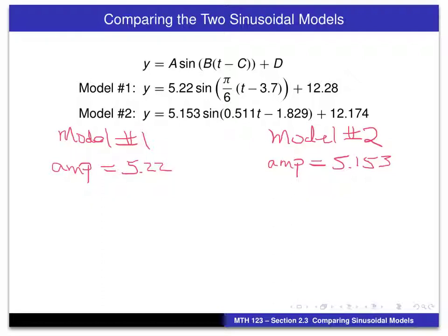Model number one having a slightly higher amplitude. We had set up model number one so it would have a period of 12. And for model number two, we have to do just a little calculation. It would be 2 pi divided by that number right there, the B value, 0.511.